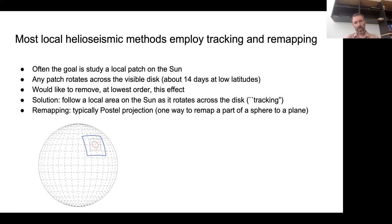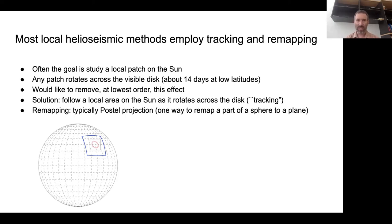When we think about local helioseismology and seismic methods, many employ a procedure called tracking and remapping. Often the goal is to study what's going on in some small patch of the sun - for example, what the flows look like around a sunspot. As the sun rotates, that patch rotates across the visible disk, and you want to get rid of this effect. In your data analysis, you follow that little patch as it rotates across the disk - this is called tracking.